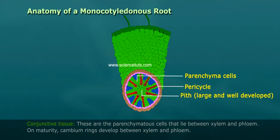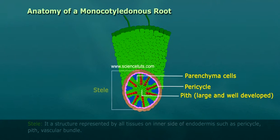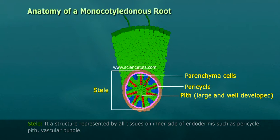On maturity, cambium rings develop between xylem and phloem. Stele is a structure represented by all tissues on the inner side of endodermis, such as pericycle, pith, and vascular bundle.